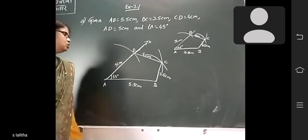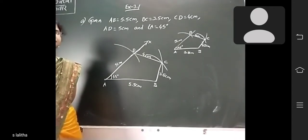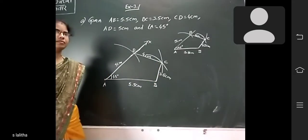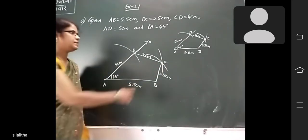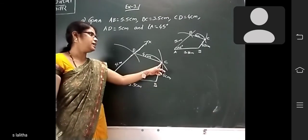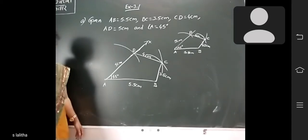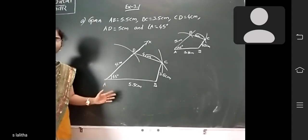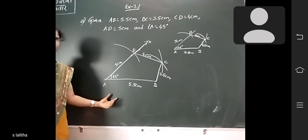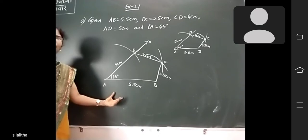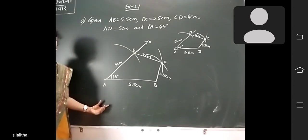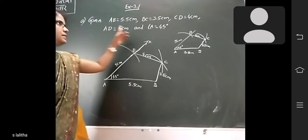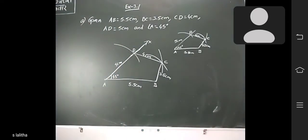Join DC and CD. Last step: thus the required quadrilateral ABCD is formed.